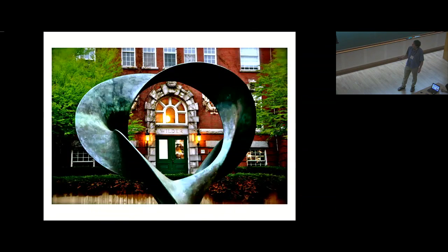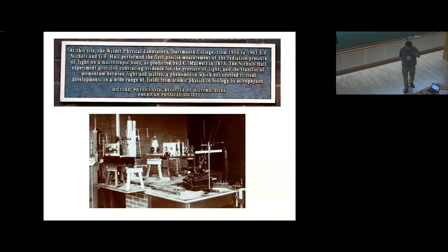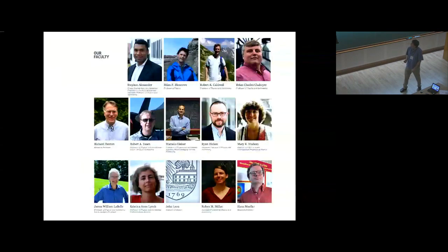So our department is called the Wilder Laboratory. And one thing that we have kind of in our history is, I don't know if you can read this, but in 1901, the first accurate measurement of the pressure of light on a macroscopic object was performed there. And this is actually something that we've heard a lot about in many of the talks here, the application of the pressure of light through various physics.